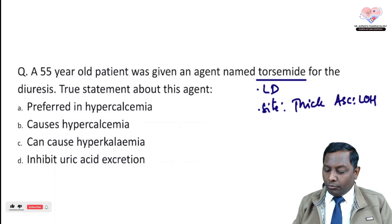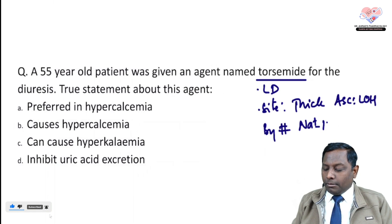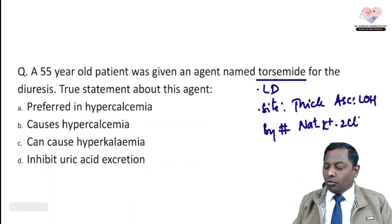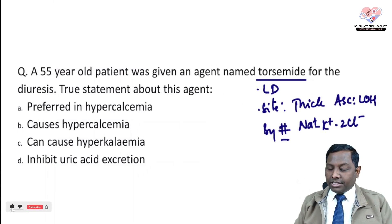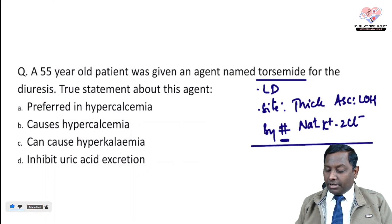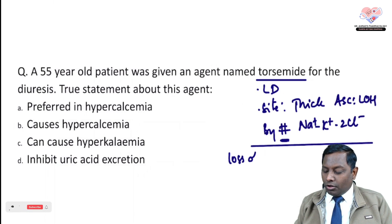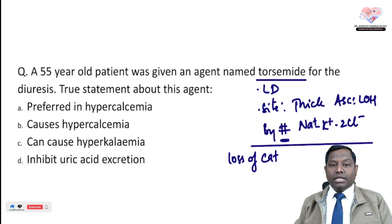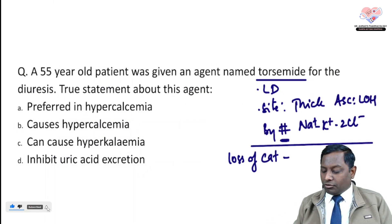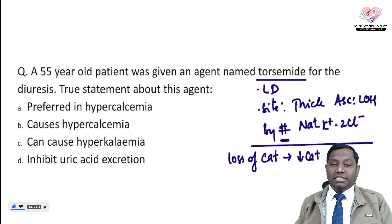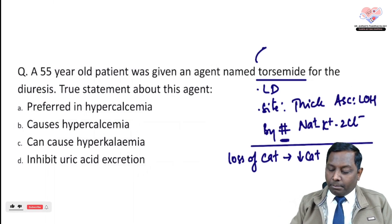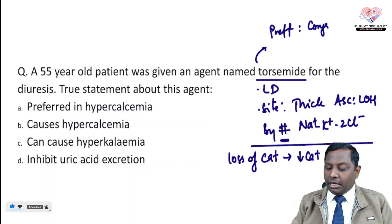Loop diuretics act at the thick ascending limb of the loop of Henle by inhibiting the sodium-potassium-2-chloride co-transporter. Do remember that loop diuretics mainly cause loss of calcium, which means they are associated with hypocalcemia. This makes them a very preferred diuretic in cases of congestion or edema.